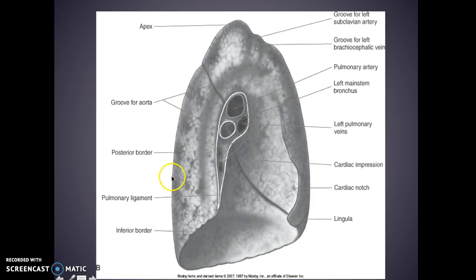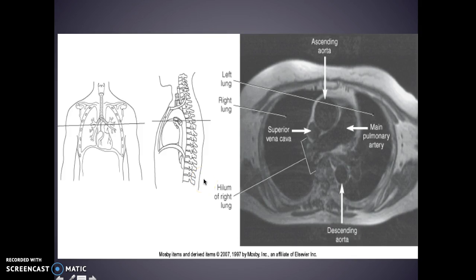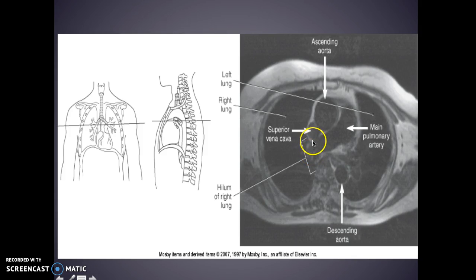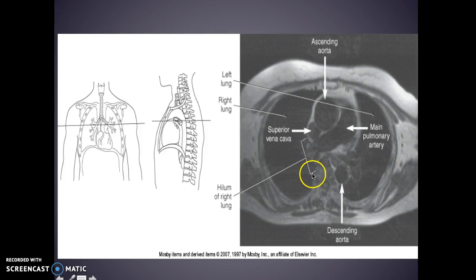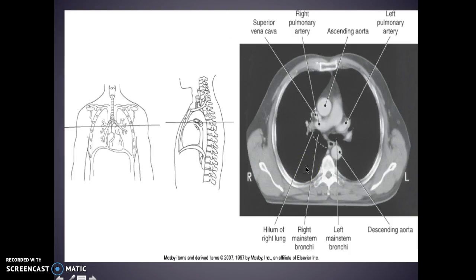Here's an MRI axial. You have your ascending aorta with your left pulmonary artery and your right pulmonary artery. Here's your superior vena cava and your descending aorta. This whole section right here is your hilum — that's your right hilum.